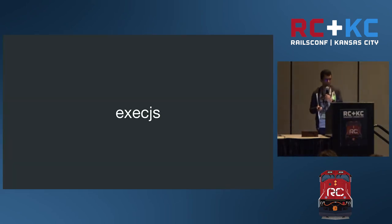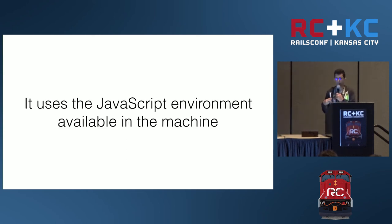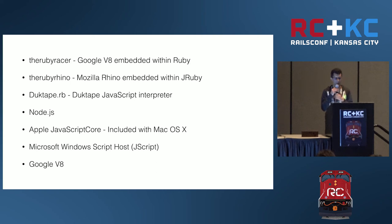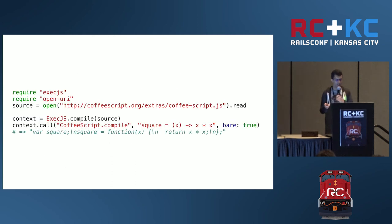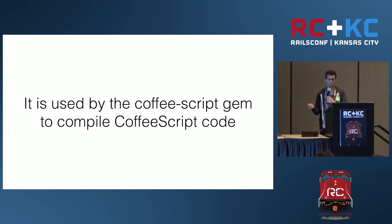The third gem is execjs. It allows you to run JavaScript code inside the Ruby environment, using the JavaScript runtime available on the machine. It works with options like Node.js and V8. It's used to compile JavaScript-based languages — like CoffeeScript — using Ruby by calling out to the JavaScript runtime.